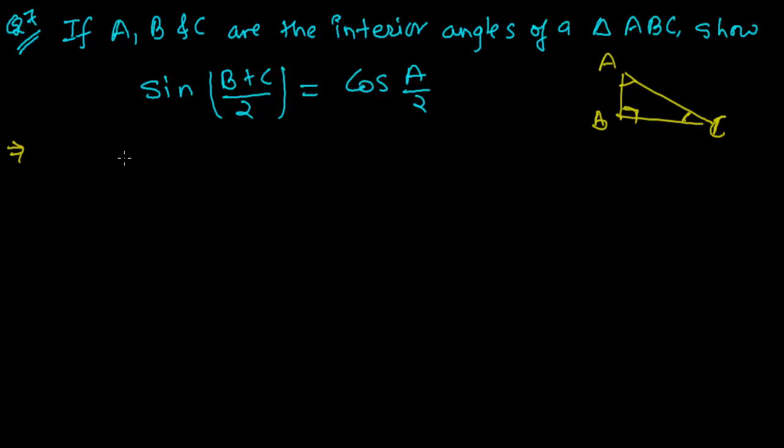We know the sum of the interior angles of a triangle is always 180 degrees. So A plus B plus C will be equals to 180 degrees. Let me divide this whole by 2. Now it will be A/2 and (B+C)/2 equals to 180 divided by 2.